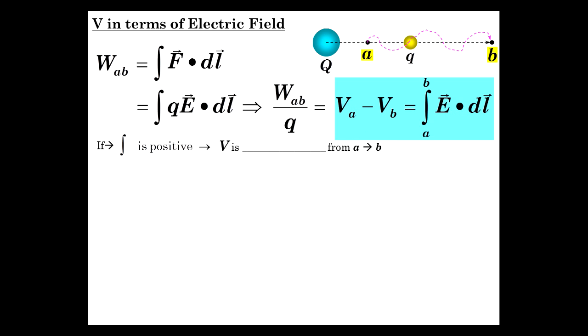Now, if the integral is positive, then V is decreasing from A to B. That should be pretty obvious. If it's positive, then VA must be bigger than VB. So as you go from here to here, the potential must be going down.